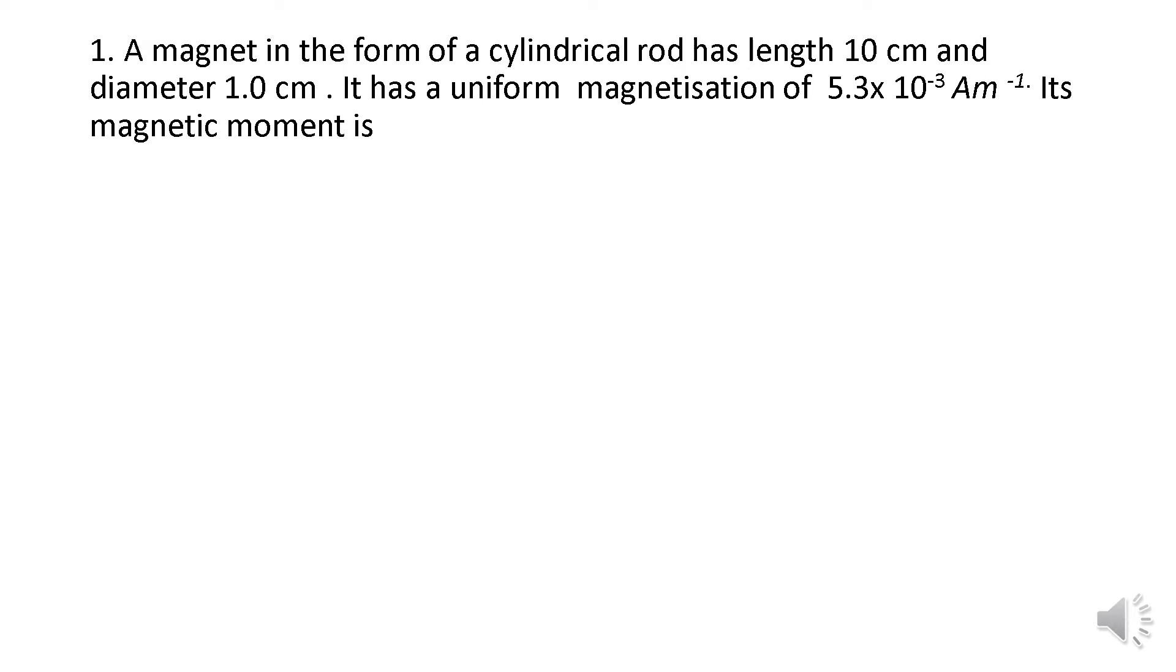The first question: A magnet in the form of a cylindrical rod has length 10 cm and diameter 1 cm. It has uniform magnetization of 5.3 × 10^-3 ampere per meter. Its magnetic moment is option (a) 4.16 mJ per Tesla, option (b) 4.16 microjoule per Tesla, option (c) 41.6 mJ per Tesla, and option (d) 41.6 microjoule per Tesla.